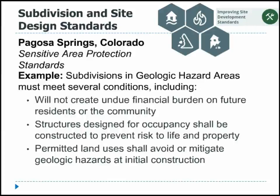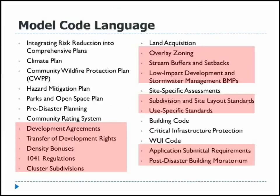For example, if you're looking at potentially subdividing in a geologic hazard area, the standards stipulate that you can't have a development that would potentially create undue financial burden on future residents — such as if you build something and then there is a landslide. How are you designing your structures to prevent risk to life and property, and how are you demonstrating that you're avoiding or mitigating hazards at initial construction?